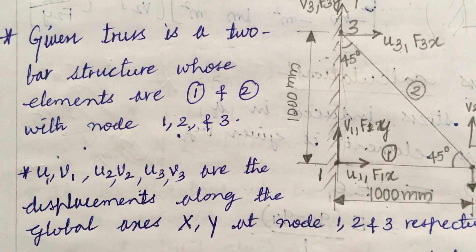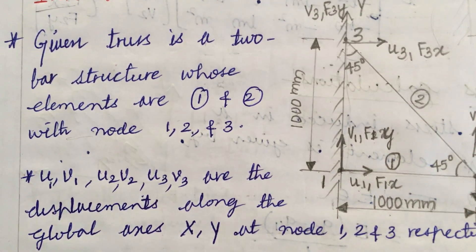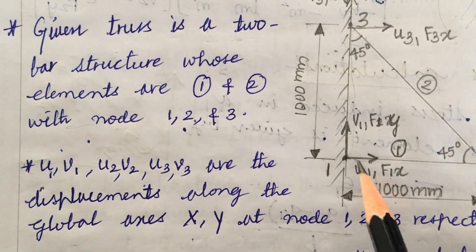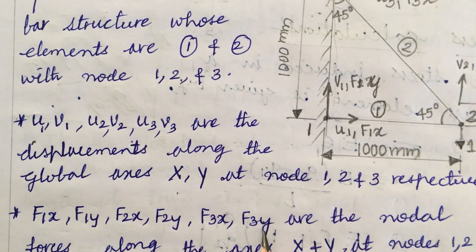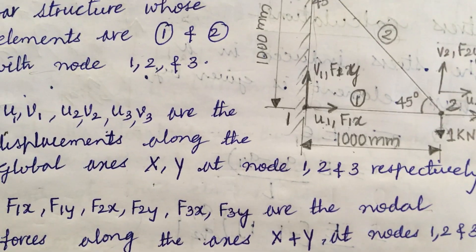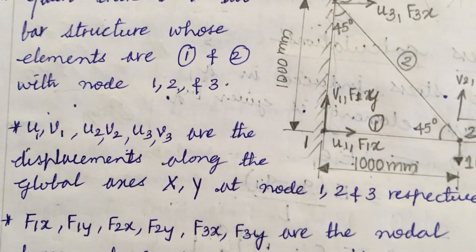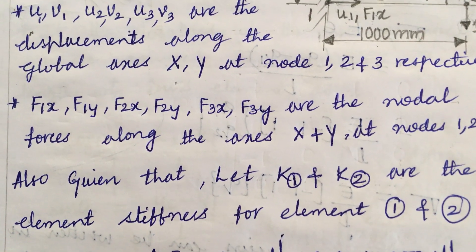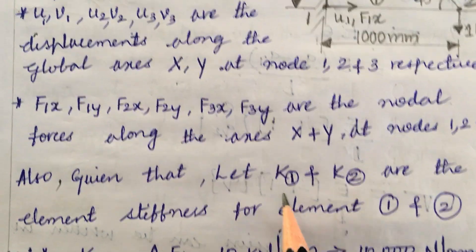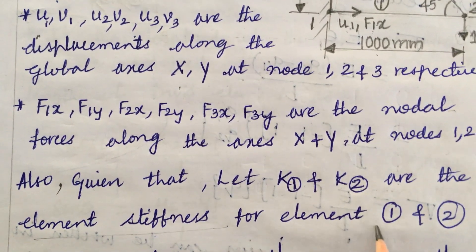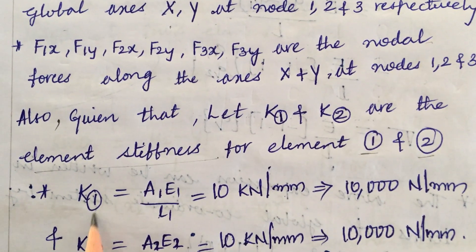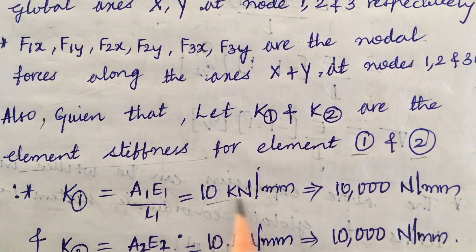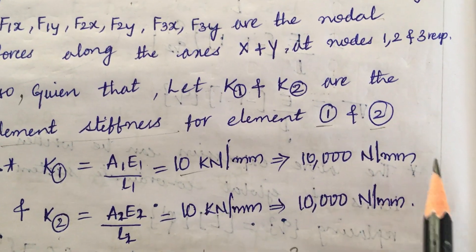Each element has 2 nodes. We have 2 elements and 3 nodes. u1, u2, u3, v3 are the displacements along the global x and y axes at nodes 1, 2, and 3 respectively. f1 through f3y are the nodal forces along the x and y axes at nodes 1, 2, and 3 respectively. k1 and k2 are the elemental stiffness, equal to A1E1/L1 and A2E2/L2, both given as 10 kilo Newton per millimeter, i.e., 10×10³ Newton per mm.